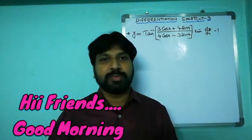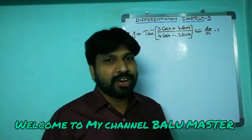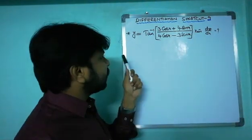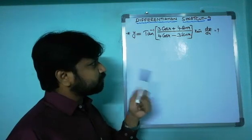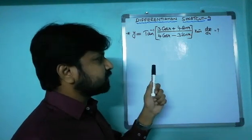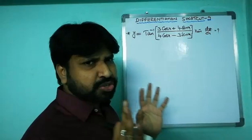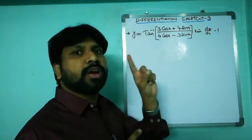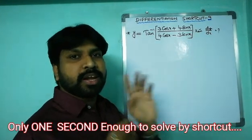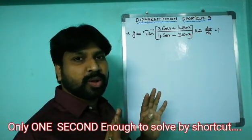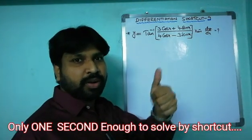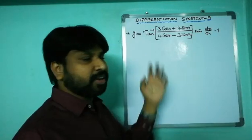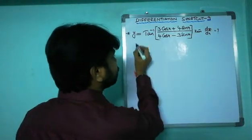Hi friends, good morning, welcome to my channel Balu Monster. Today I'm going to discuss shortcut number nine in differentiation. y is equal to tan inverse of (3cosx + 4sinx) / (4cosx - 3sinx). What about dy/dx? Friends, with this shortcut you can solve this with no doubt at all within one second. First of all, look at the procedure — how to solve this kind of question.